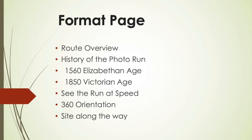In each section I'll give a bit of local history on each of those sections of the run, and then we'll look at what that run would look like if you were running it at a speed of over 20 kilometres an hour. Then I'll give you a 360 orientation, and then we'll look at the different sites along the way.